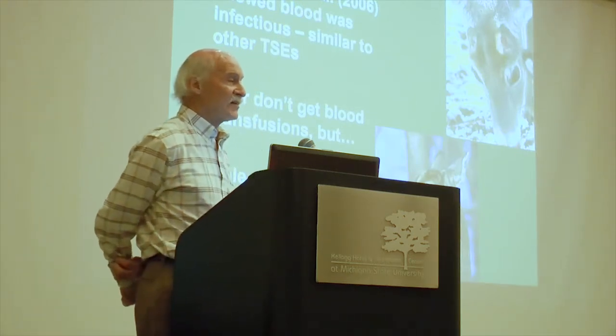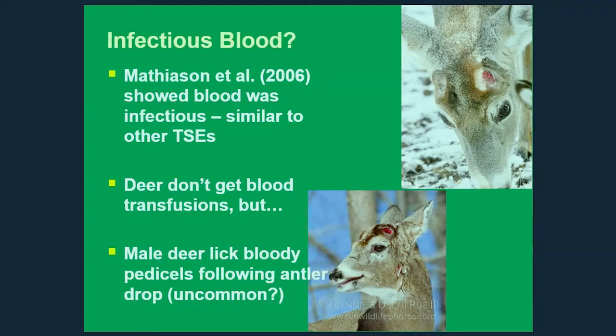Blood is infectious, as Dr. Mathiason's work has shown. Deer don't get transfusions, but male deer when they lose their antlers do have bloody pedestals, and it's been observed that deer occasionally lick those bloody pedestals of other males nearby. So there's a potential route of blood exposure. I'm not sure how frequent that is or how much of a risk factor it is, but it's certainly a potential way animals could be infected by direct contact.